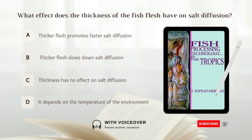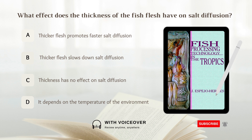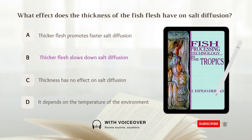What effect does the thickness of the fish flesh have on salt diffusion? A. Thicker flesh promotes faster salt diffusion. B. Thicker flesh slows down salt diffusion. C. Thickness has no effect on salt diffusion. D. It depends on the temperature of the environment. Answer: B. Thicker flesh slows down salt diffusion.